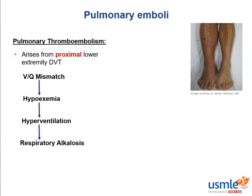The pulmonary blood vessels also respond to hypoxemia by vasoconstricting. This shifts blood from the underperfused segment to the perfused segment — this is called shunt, because blood is being shunted from the occluded segments to the well-perfused segments.